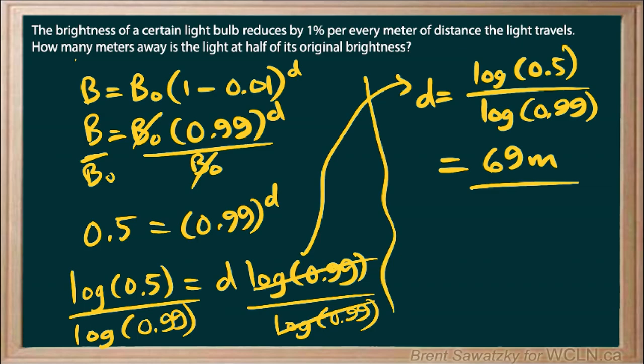We would see the brightness at half the original brightness, or half the brightness at the position of the light itself. And there we go, that's our answer.